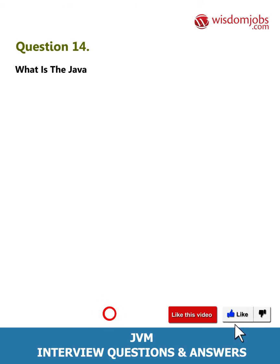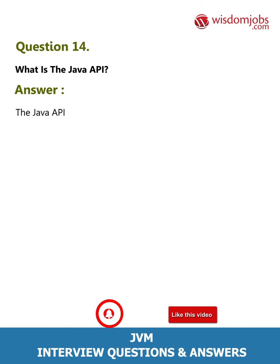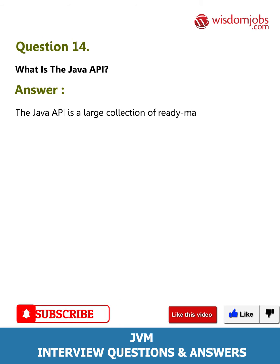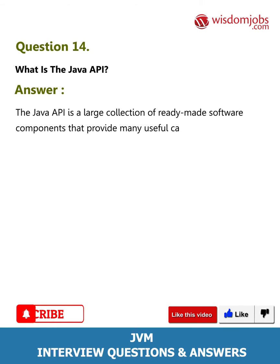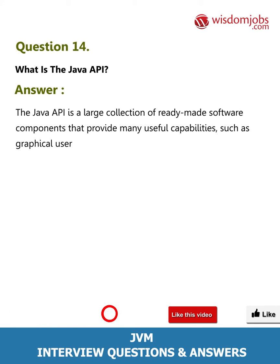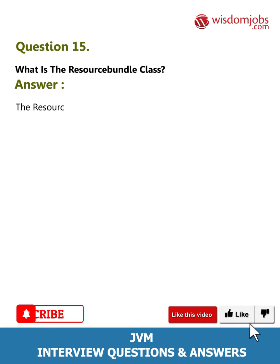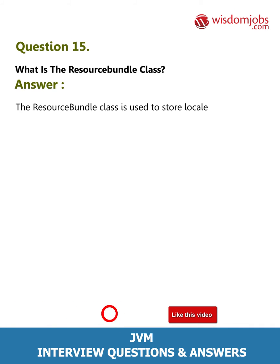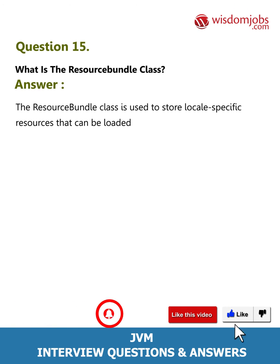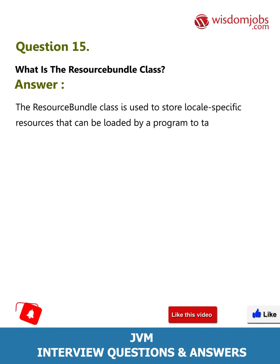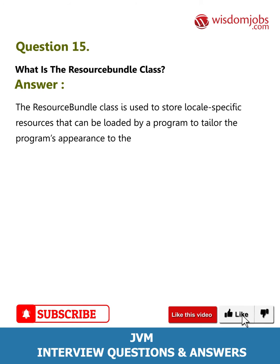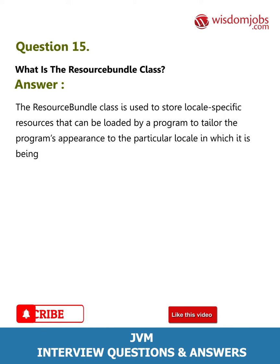Question 14: What is the Java API? Answer: The Java API is a large collection of ready-made software components that provide many useful capabilities, such as graphical user interface (GUI) widgets. Question 15: What is the ResourceBundle class? Answer: The ResourceBundle class is used to store locale-specific resources that can be loaded by a program to tailor the program's appearance to the particular locale in which it is being run.